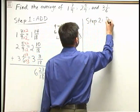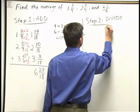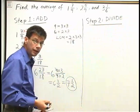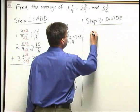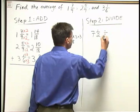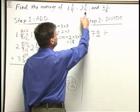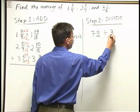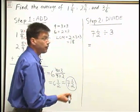In step two, we divide. We take what we got when we added the three numbers together. We got seven and a half. And we're going to divide by how many numbers we added up in the first place. We had one, two, three. So we're dividing by three. Seven and a half divided by three.